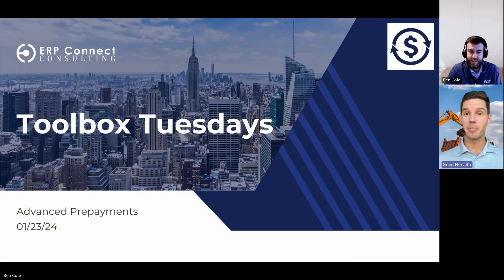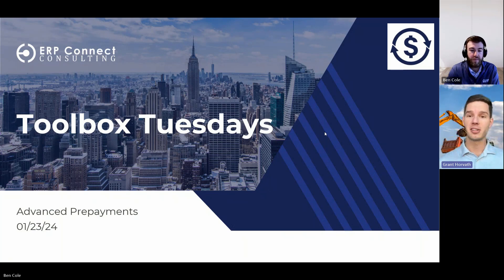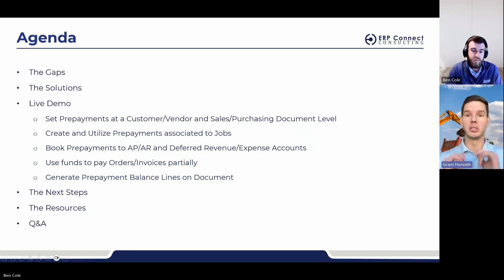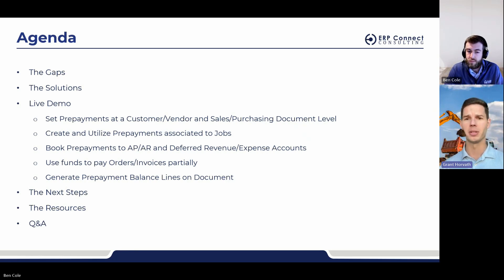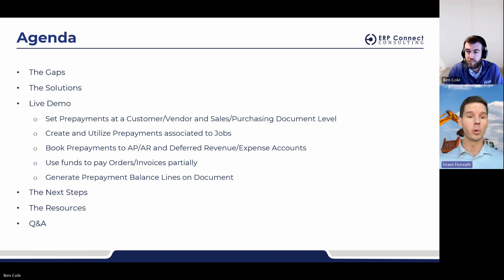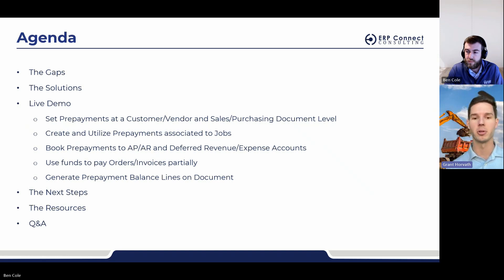Let's kick this off — we're doing episode 12 of Toolbox Tuesdays. Today we're going through our Advanced Prepayments extension for Business Central Cloud. The agenda: we'll start by looking at the current gaps in out-of-the-box Business Central, the solutions ERP Connects provides to fill those gaps, and then Ben will hop into a live demo showing how to set prepayments at a customer/vendor sales/purchasing document level, create and utilize prepayments associated to jobs, and book prepayments to AP/AR and deferred revenue/expense accounts.